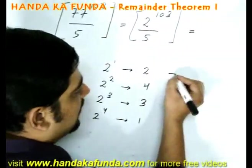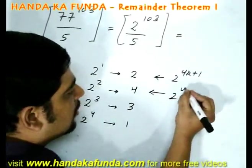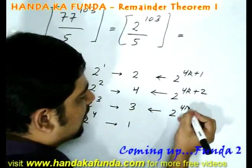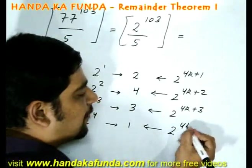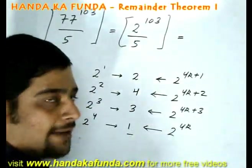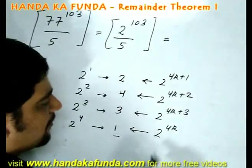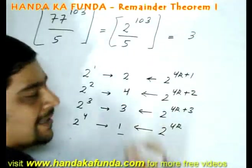So anything which goes by the format of 2 to the power of 4k plus 1 will give me the answer 2. 2 to the power of 4k plus 2 will give me the answer 4. 2 to the power of 4k plus 3 will give me the answer of 3. 2 to the power of 4k will give me the answer 1. This means my answer will be 2 to the power of 4k plus 3, or 3 in this case.